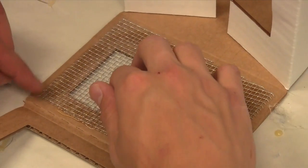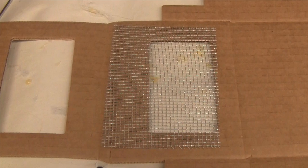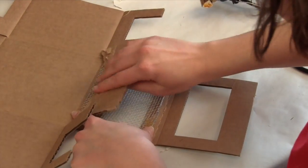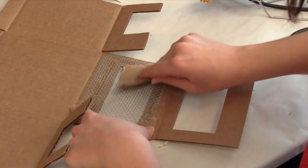Place the metal screen over the applied glue. Make sure that the screen completely covers the window, but does not cover any of the perforated lines. Using your spare cardboard, apply pressure to the screen, ensuring a strong bond with the glue.